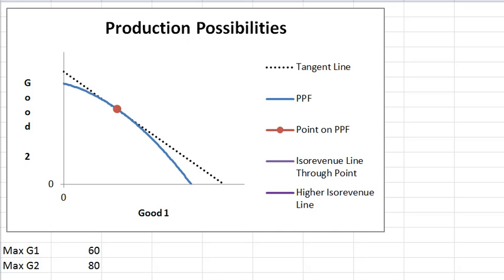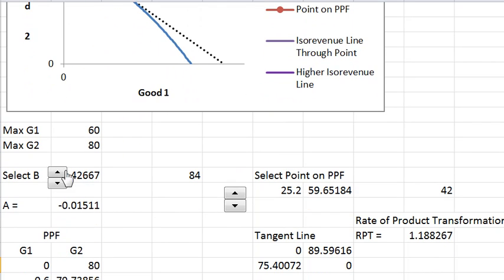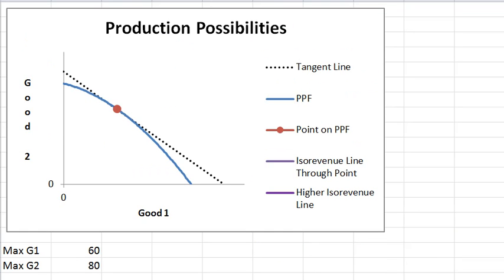Let's look at the spreadsheet a little bit. You have several controls down here. The control B affects the curvature, and I will show that in a minute. The control over here selects the particular point on the PPF. I'm going to vary those and describe what's happening since the controls are outside the video image.